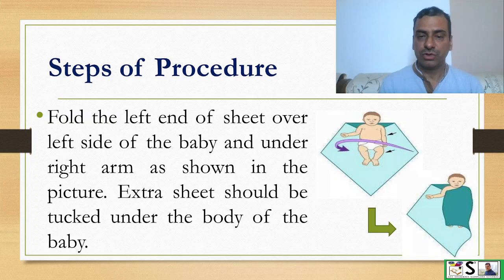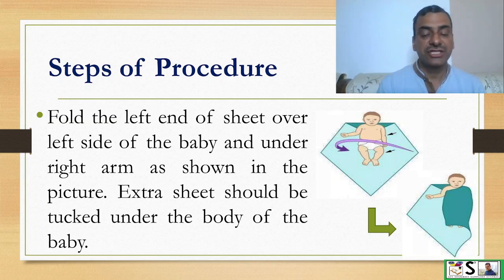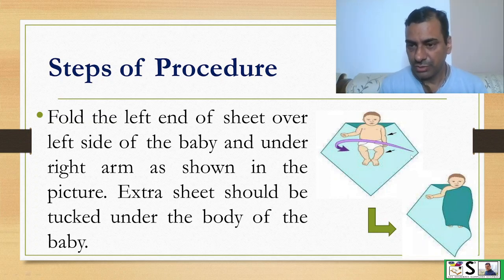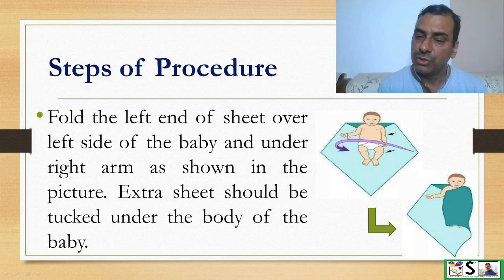Fold the left end of the sheet over the right side of the baby. As shown in the picture, the extra sheet should be tucked under the body of the baby. We will fold the sheet and place it under the body of the baby, below the arm, like this.